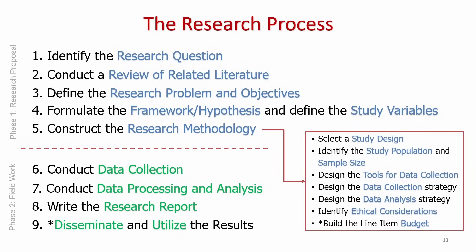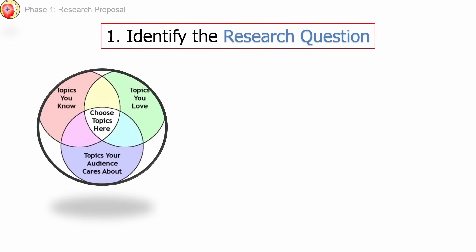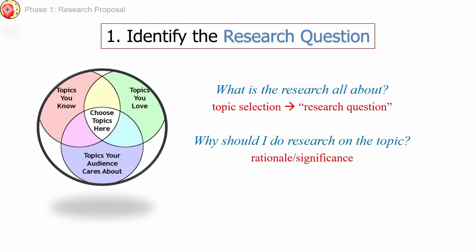The red broken line delineates the five steps in Phase 1 and the four steps in Phase 2. Let's discuss the steps in Phase 1, starting with number one: identifying the research question. At this stage, you need to answer the question — what is the research all about? Topic selection is very important. You need some baseline knowledge or expertise in order to study a certain topic.